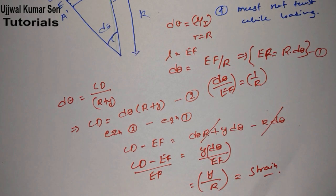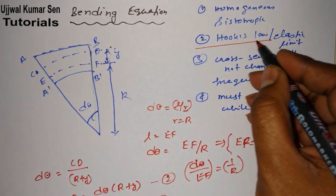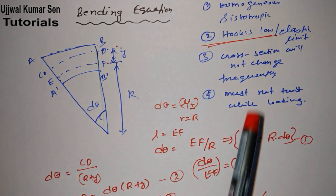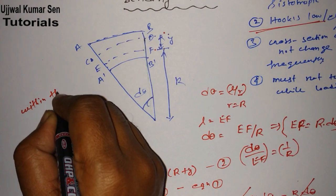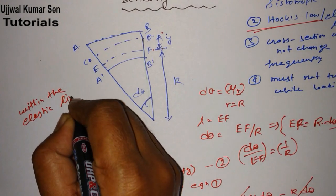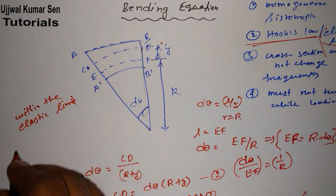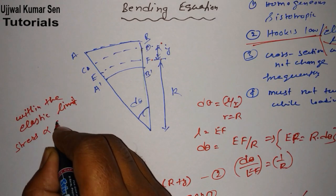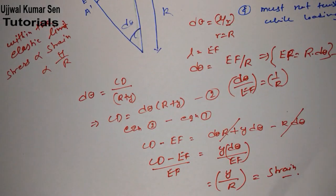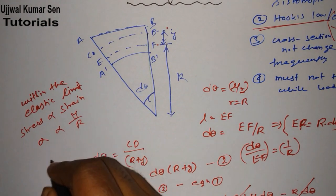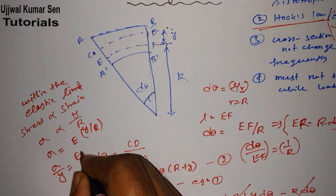This expression (CD − EF)/EF is the strain — change in length divided by original length. This strain is happening because of the applied load. Since we assumed the beam follows Hooke's law and is within the elastic limit, stress is directly proportional to strain. Therefore stress σ is proportional to 1/R, and since strain = y/R, we get σ = Ey/R.